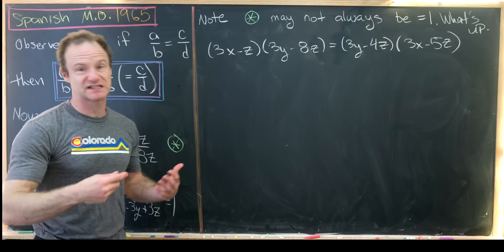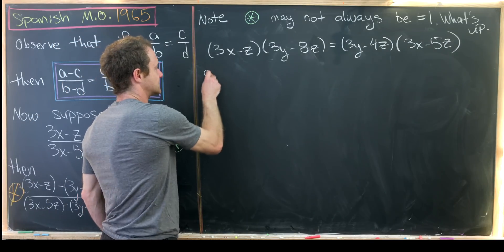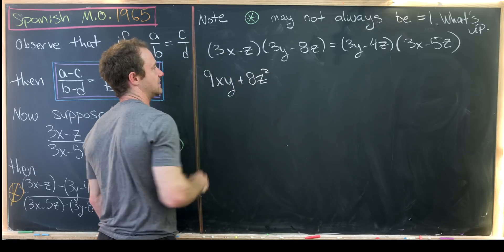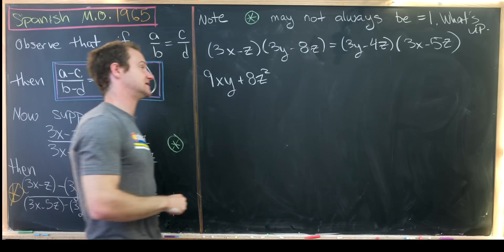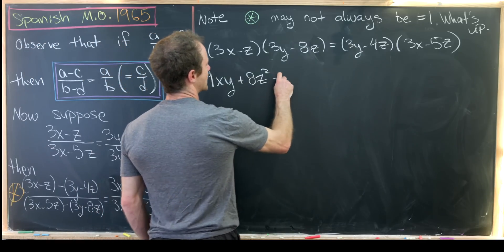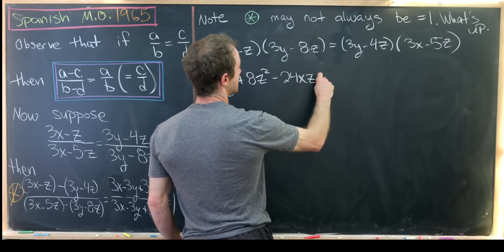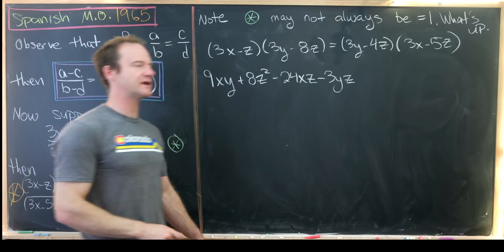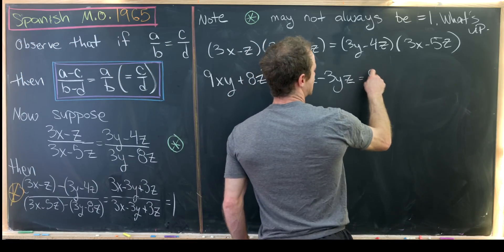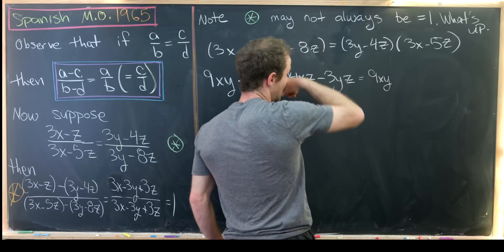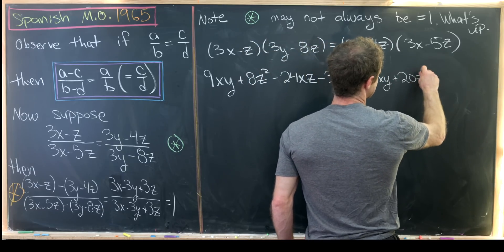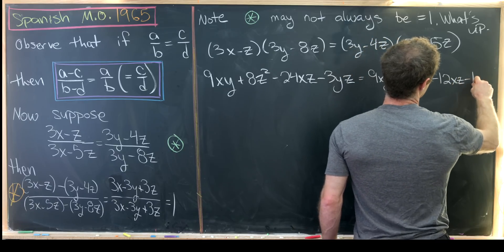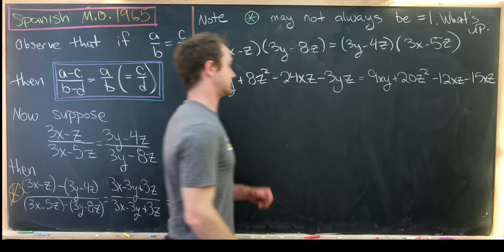So now from here we'll just expand everything out. This will give us 9xy plus 8z squared from 3x times 3y and 8z times z. And then we have minus 24xz, then minus 3yz. So that's what we get for that expansion. So let's see what we get for the next expansion. We'll have 9xy again, and then we'll have plus 20z squared, and then minus 12xz minus 15yz when all is said and done.